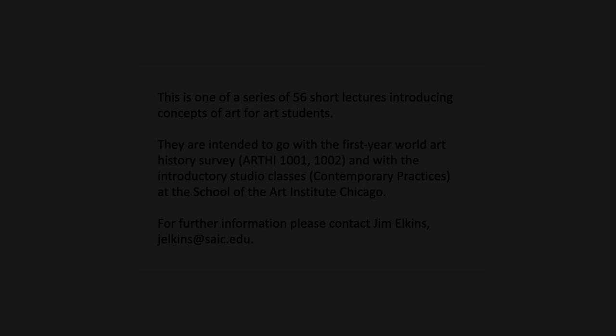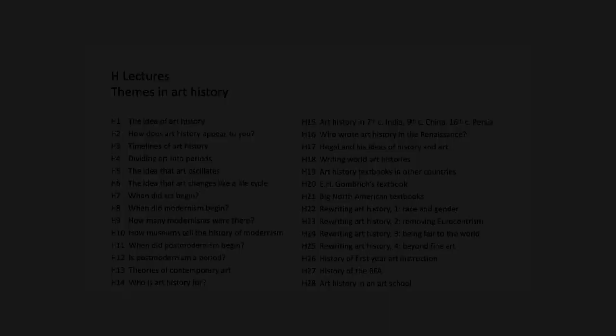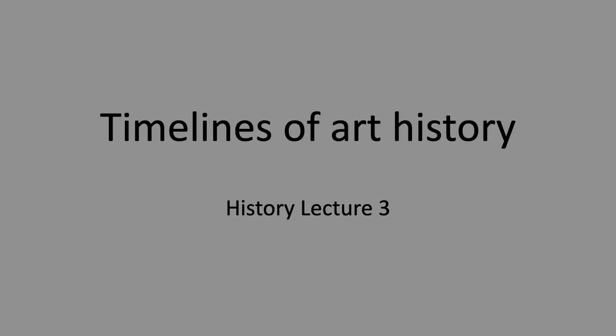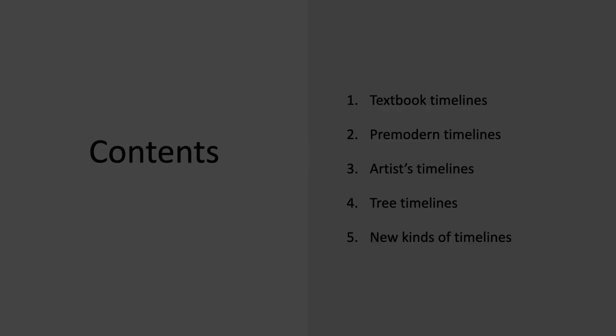Welcome to Theories and Problems in Visual Art. This is lecture three in the history series, on timelines of art history. I have five different kinds of timelines to talk about — a couple of them experimental, the rest things you find in textbooks.